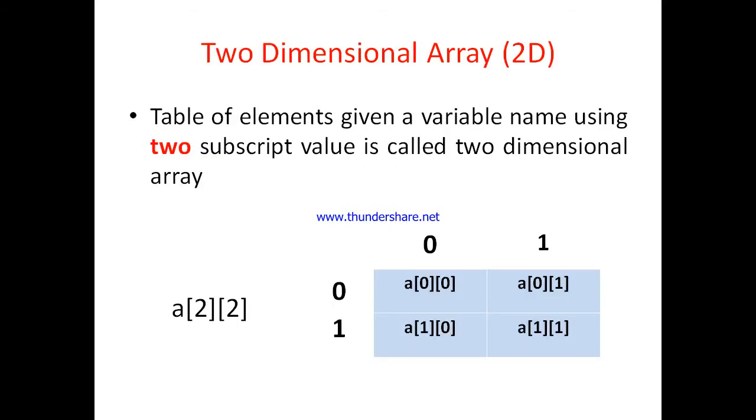Now two-dimensional array means what? Two-dimensional array means table of elements. Table of elements means the elements which are represented in the form of rows and columns and which having the single variable name.